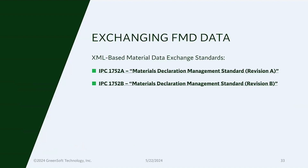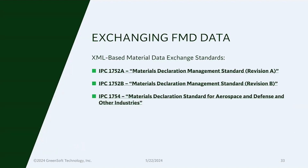1752B has been less adopted. 1752C is currently in development and will be released in the next year or so. I would expect 1752B won't see a lot of adoption because 1752C is coming. There's also IPC-1754, which is specific to aerospace and defense industries and has some additional information like processed chemicals, and allows for different kind of reporting methods.